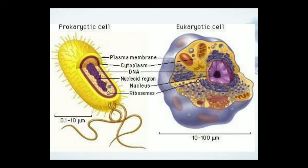Both of them contain the plasma membrane. Cytoplasm is there in both of them. They do contain DNA, that is the genetic material. But the genetic material is present in the nucleoid region in the case of the prokaryotic cell, whereas it is present in the nucleus in the eukaryotic cell.